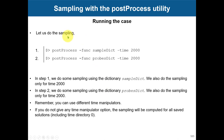To run using this utility, the syntax is: postProcess -func, and then you pull a name — sampleDict — which is the name that exists in the system directory. You can also use an option to sample at a specific time, for example time 2000. Basically you read this dictionary and follow the instructions that you have there.